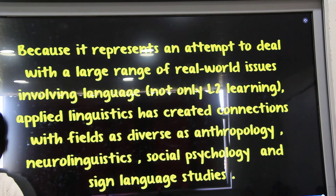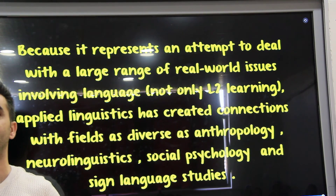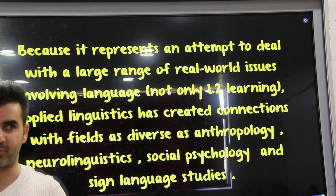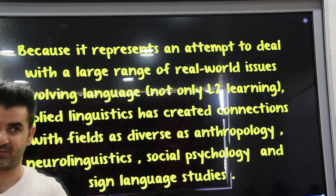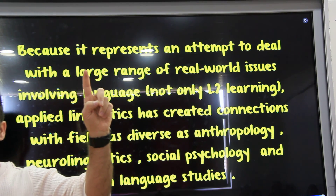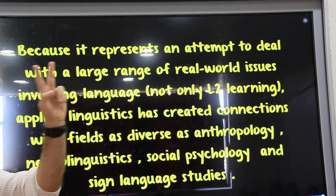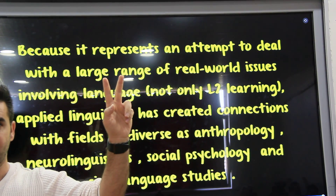Communicative competence is the ability to use the language accurately, appropriately, and flexibly. Accuracy relates to linguistic competence, appropriateness relates to sociolinguistic competence, and flexibility relates to strategic competence.